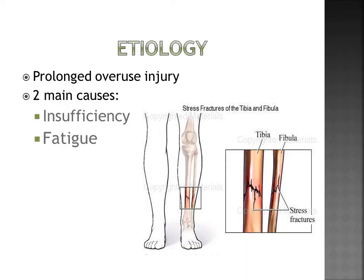To start off, we will talk about the etiology. What exactly is a stress fracture? A stress fracture is basically a prolonged overuse injury that leads to small cracks in the bone. Here are the two types: insufficiency and fatigue.